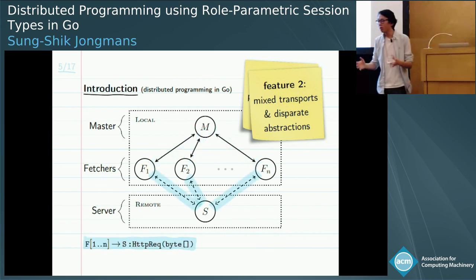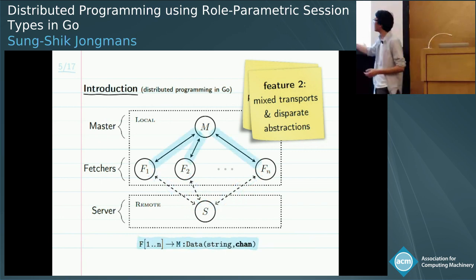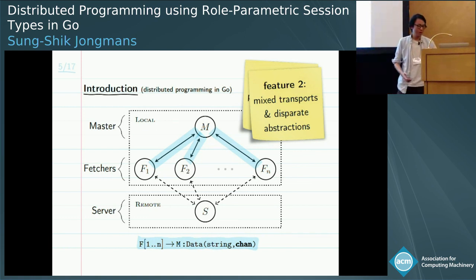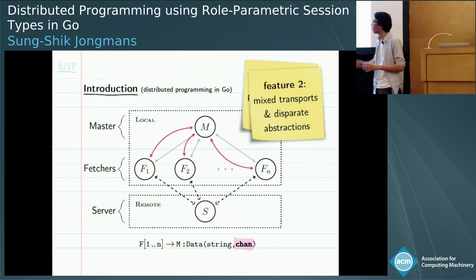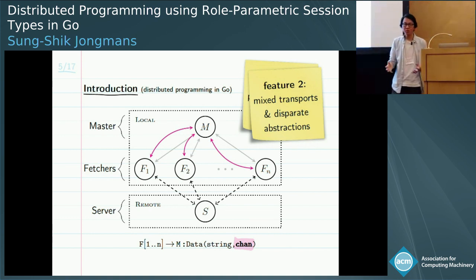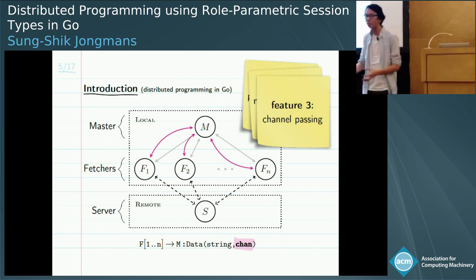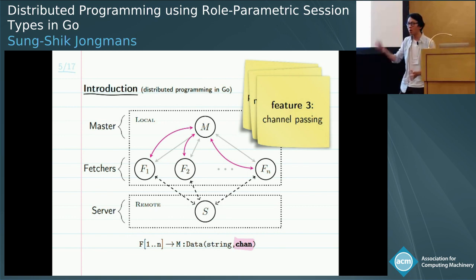The fetchers then in parallel, but individually, perform the actual HTTP request for the data. The server sends back the data, the fetchers parse it and send it back to the master. Interestingly, in this last series of communications the fetchers also send back a fresh set of channels, so that in the next round of fetching the master and fetchers use a new set of channels, discarding the old ones. This is the third core feature of PGET: it uses the higher-orderness of channels in Go — actual channel passing — which was already the case in the original HTCAT program, and this made post-factum verification particularly challenging.